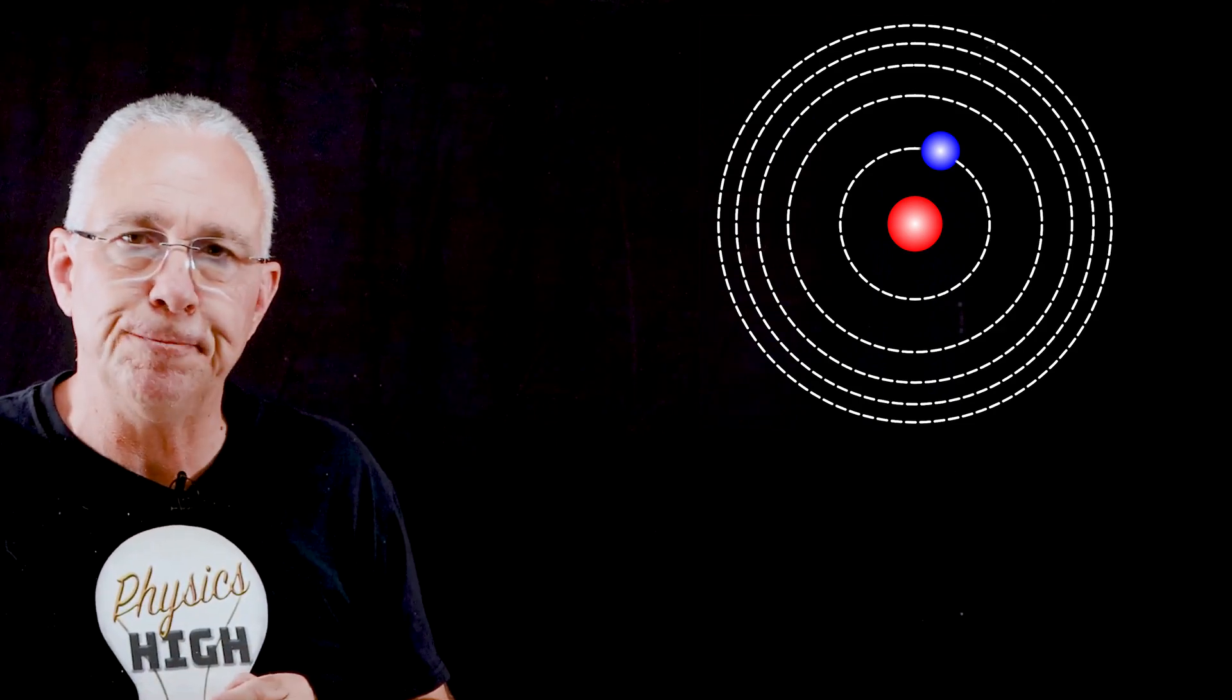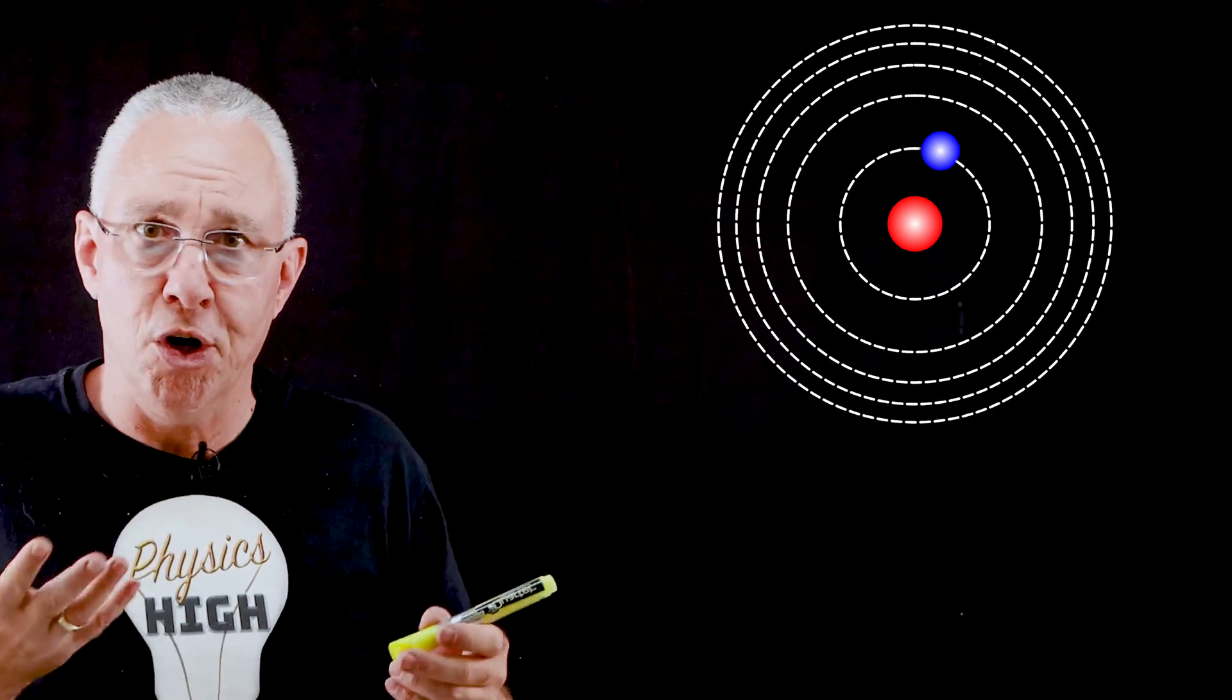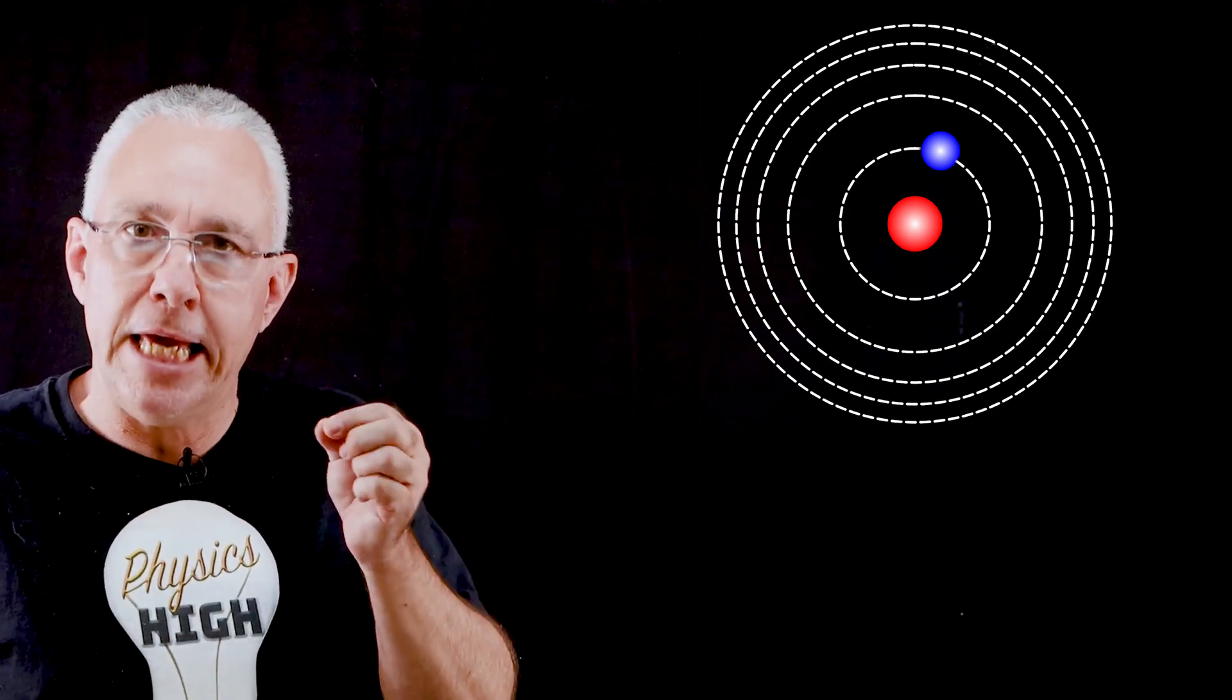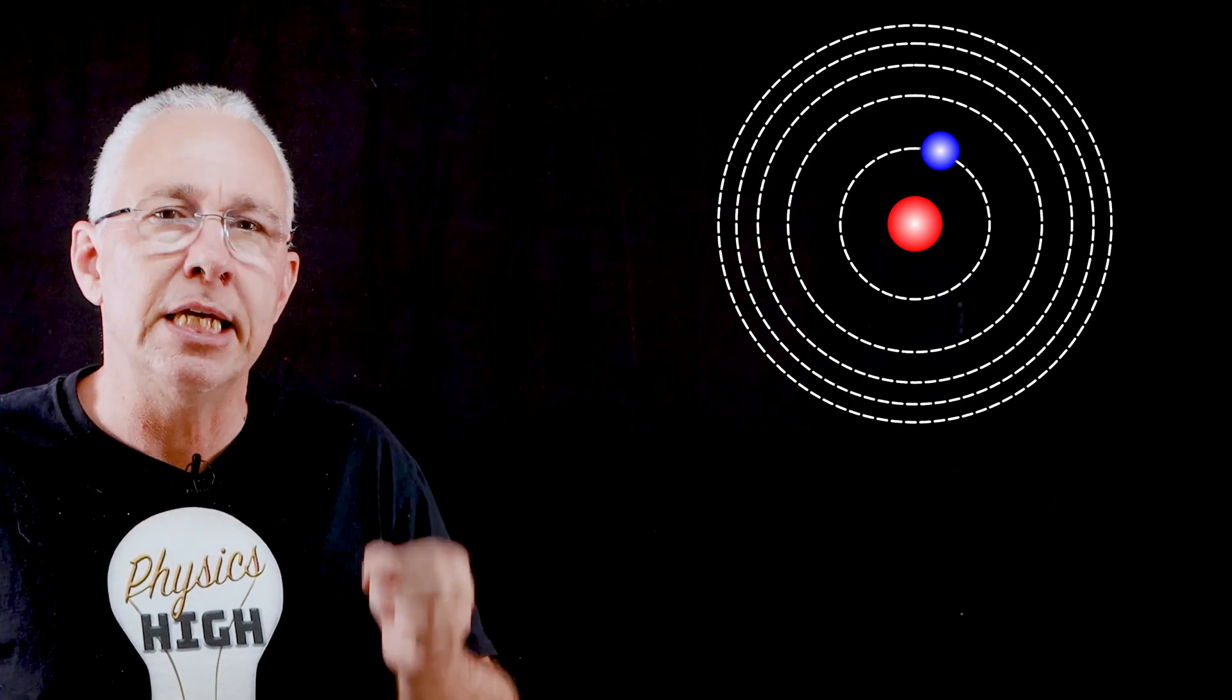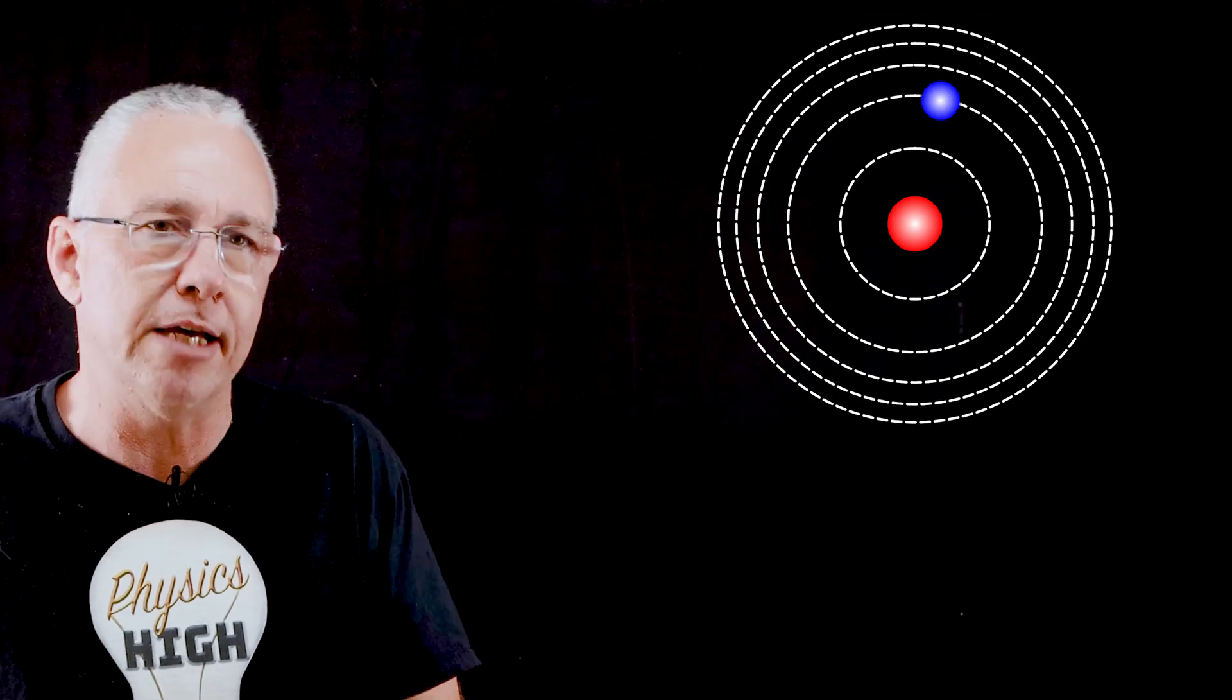If white light hits this electron that is sitting in a particular lower shell, it has the potential to jump to a new energy level or not. And it'll only jump to a new energy level if the energy it receives is equal exactly to the difference in the energy levels.